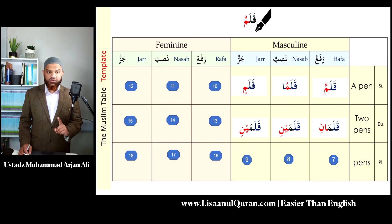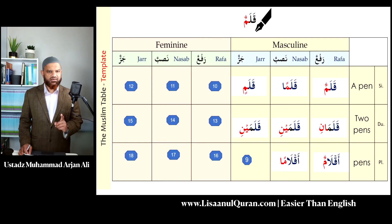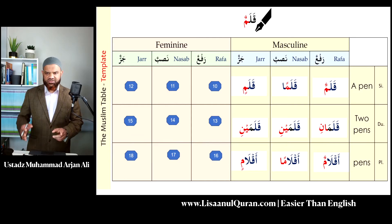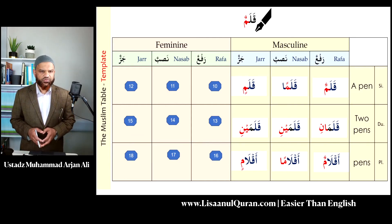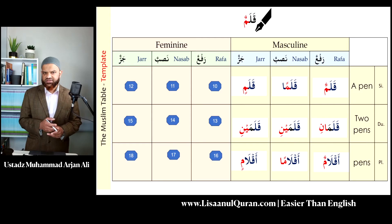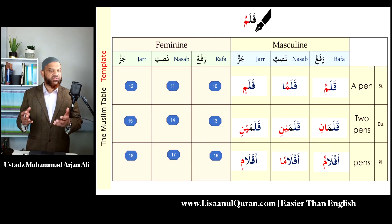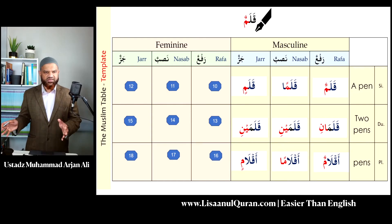But the plural will not follow the standard pattern. Note there are some changes at the beginning of the word, whereas with the standard there is no change and we have the suffixes already learned. The word 'qalam' is a name of a thing, so there is no female equivalent — it is simply this.